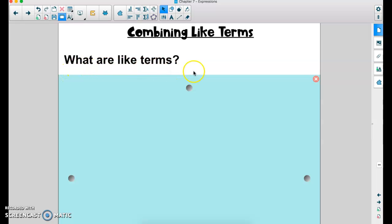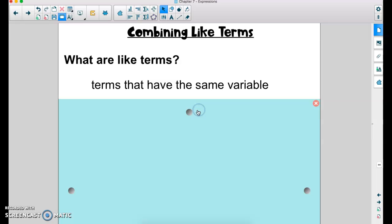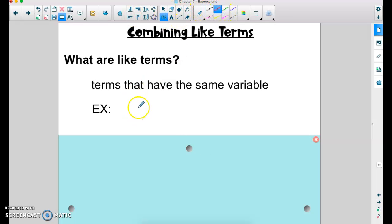Let's start with what are like terms? Does anybody remember? They are terms that have the same variable. So let's copy down some examples of like terms. If I have the term 7x, a like term to 7x would be anything else that also has an x. So 3x would be a like term. One half x would be a like term. Anything that has the same variable.